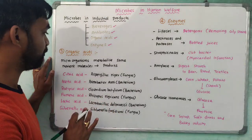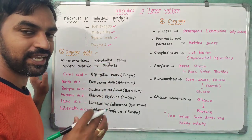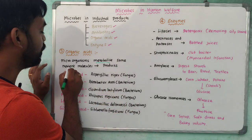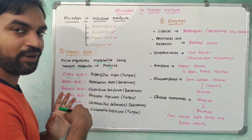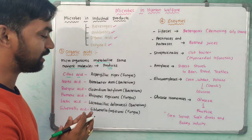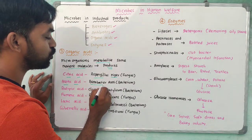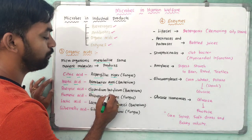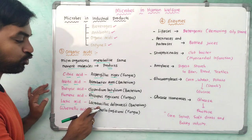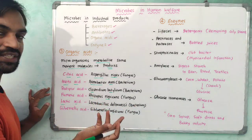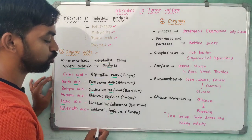In industrial products, organic acid production is another area where microorganisms help. Through metabolism — catabolism and anabolism — nutrient molecules are broken down to produce organic acids. Citric acid is produced by Aspergillus niger (a fungus). Acetic acid is produced by Acetobacter aceti (a bacterium). Butyric acid is produced by Clostridium butylicum. Fumaric acid is produced by Rhizopus nigricans (a fungus). Lactic acid is produced by Lactobacillus delbruckii. Gibberellic acid, a plant growth hormone, is produced by Gibberella fujikuroi (a fungus).